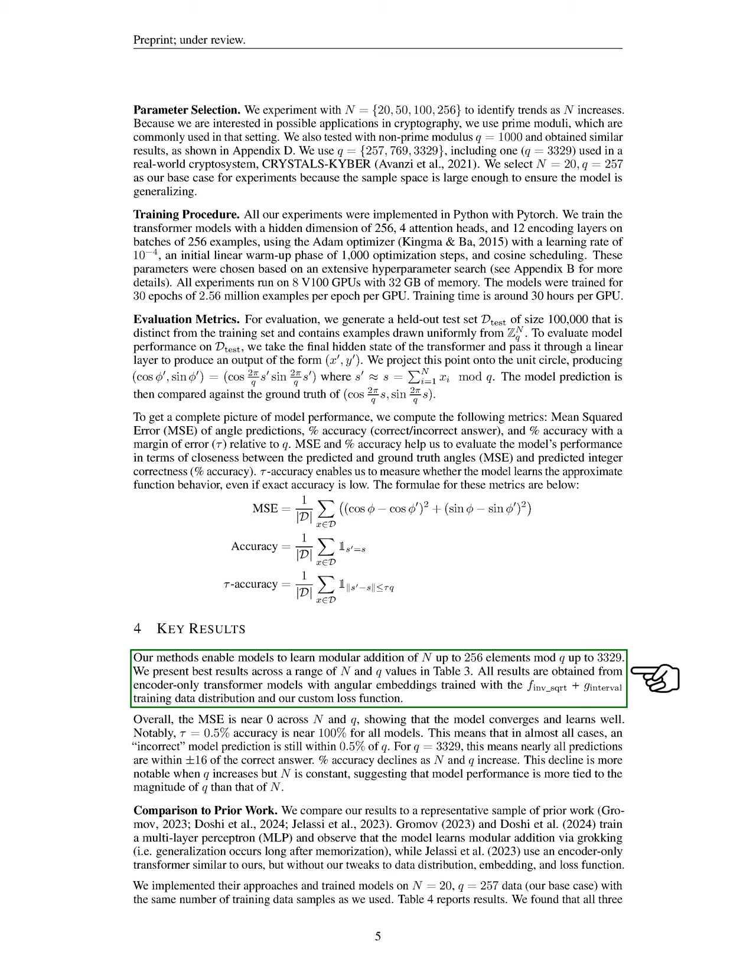Notably, the accuracy with a small margin of error is nearly 100% for all models, meaning that most predictions are very close to the correct answers. However, accuracy tends to decline as the number of elements and the modulus increase, particularly when the modulus increases while the number of elements remains constant. In comparing our results to prior work, we trained a multi-layer perceptron and observed that it learns modular addition through a process called grokking, where generalization occurs after memorization.